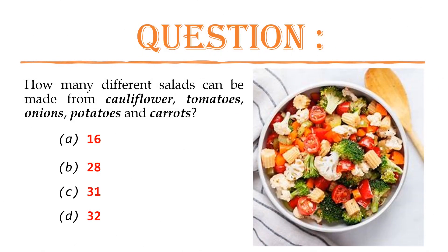How many different salads can be made from cauliflower, tomatoes, onions, potatoes and carrots? A. 16, B. 28, C. 31, D. 32.